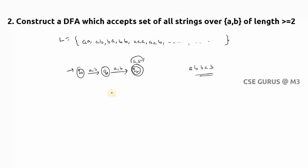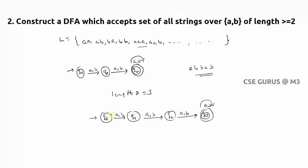If it is asked for length greater than or equal to three, that means string length at least three. Simply add one more state with the same transitions. For length ≥ 2 we repeat the a/b transition two times; for length ≥ 3 we repeat three times then add a self-loop. For length ≥ 4 add one more state. This is the logic to follow when the question involves length greater than or equal to some number.